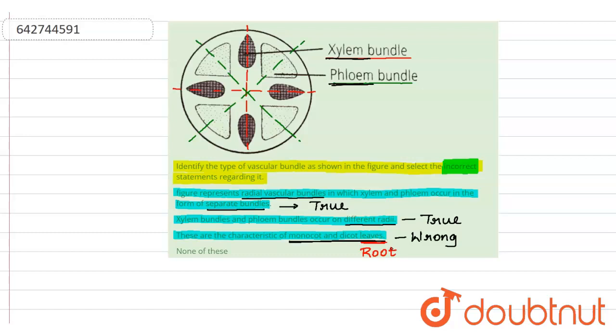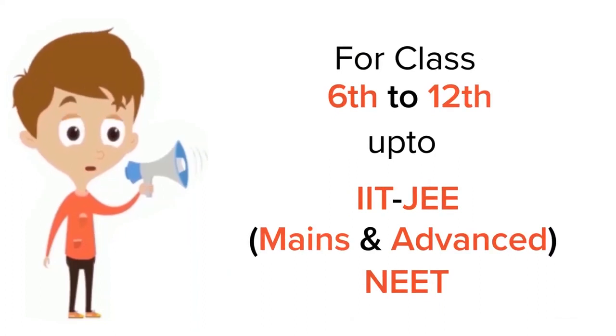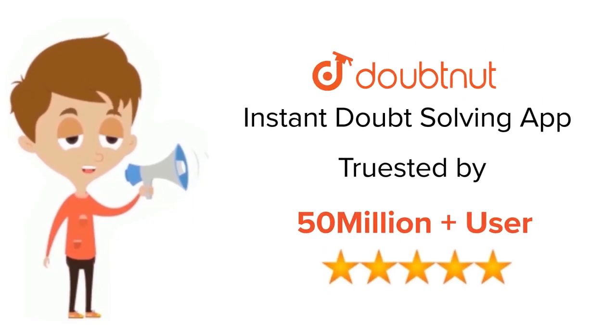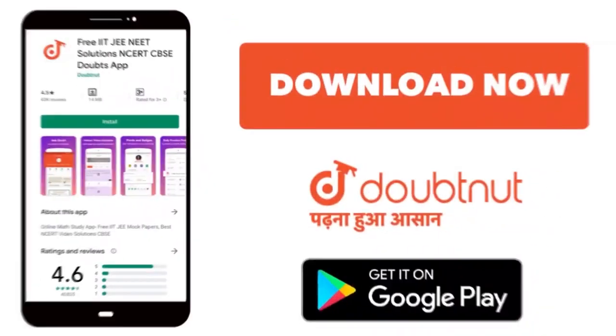So last one, none of the above, is not the option. So the wrong statement is the third one: these are the characteristics of monocot and dicot leaf. Thank you. For class 6 to 12, IIT, JEE, and NEET level, trusted by more than 5 crore students, download Doubtnet app today.